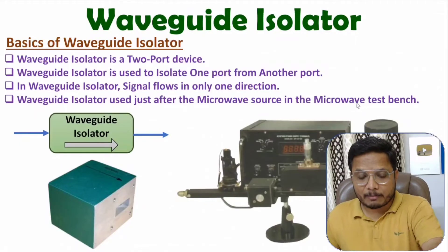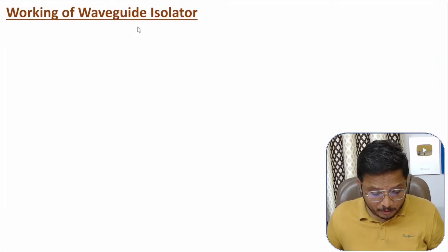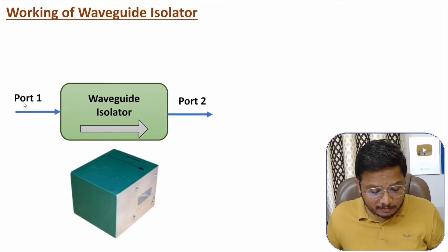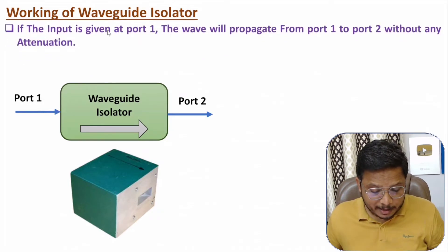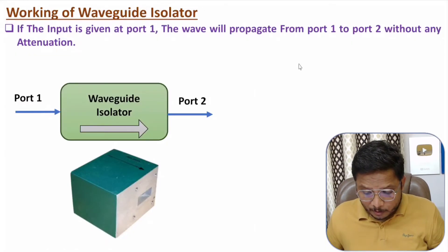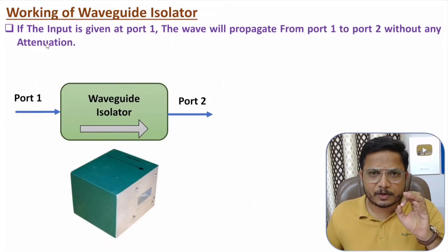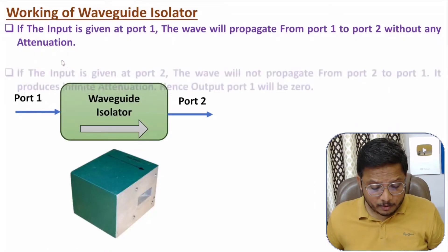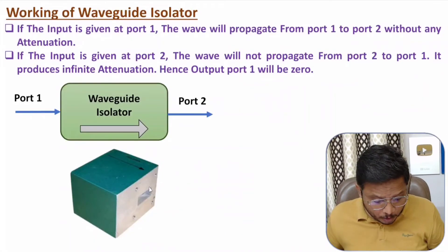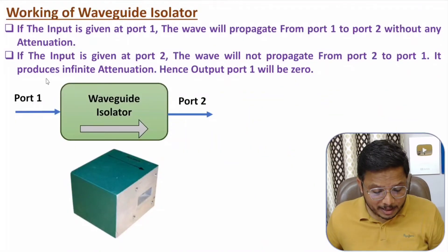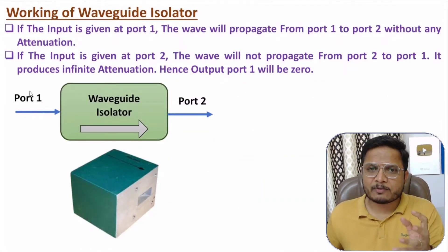Now I will discuss the working of waveguide isolator. Signal can flow from port one to port two only. If you give input at port one, then the wave will propagate from port one to port two without any attenuation — ideally zero attenuation. But if you give input at port two, signal will not go to port one, meaning there will be infinite attenuation, and hence output at port one will be zero.